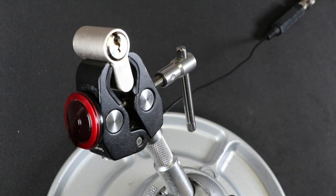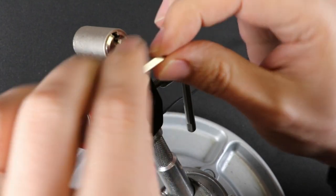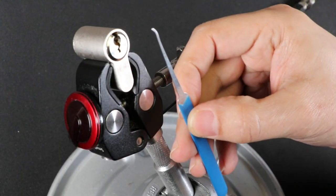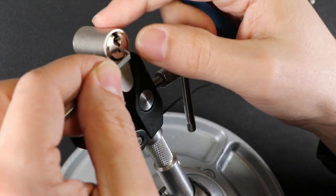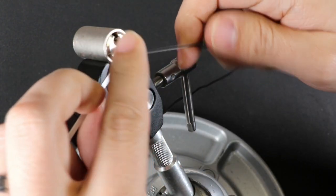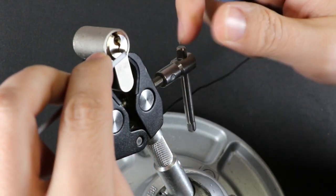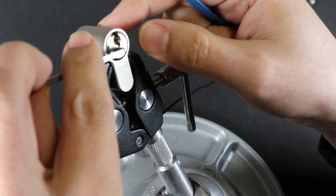This lock has five pins in it. It's got some really crazy warding here, and that's the main defense of this. I think there's some spools in here. We'll see after. To pick it, I have this really thin SSDev short hook from Sparrows. They have the same profile in two different thicknesses. This is the thinner of the two.